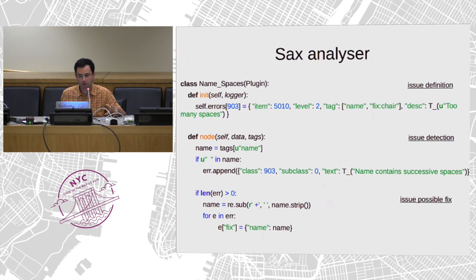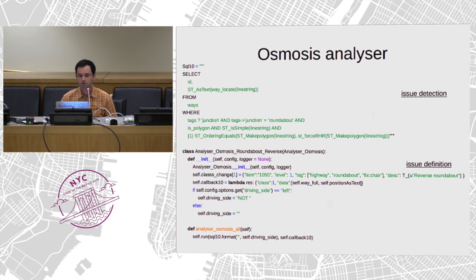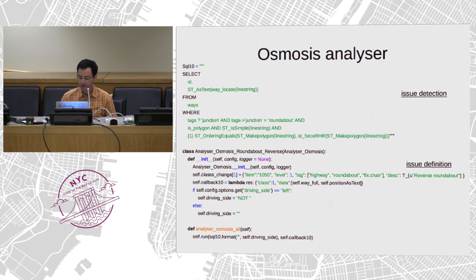A more complicated analyzer is based on geometry. For geometry, we use a database and the checks are more complex because we can check tags and geometry on multiple objects. For example, one analyzer is about detecting reverse roundabouts — we can check the correct one-way direction of a roundabout depending on the country and report an error.